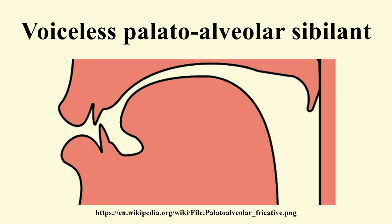Its phonation is voiceless, which means it is produced without vibrations of the vocal cords. In some languages the vocal cords are actively separated, so it is always voiceless; in others the cords are lax, so that it may take on the voicing of adjacent sounds. It is an oral consonant, which means air is allowed to escape through the mouth only. It is a central consonant, which means it is produced by directing the air stream along the center of the tongue, rather than to the sides. The airstream mechanism is pulmonic, which means it is articulated by pushing air solely with the lungs and diaphragm, as in most sounds.